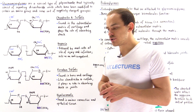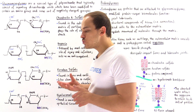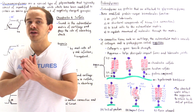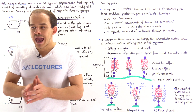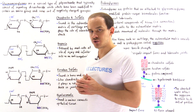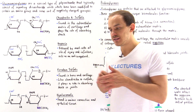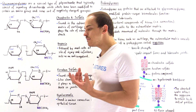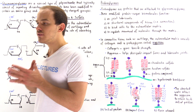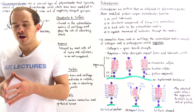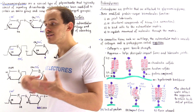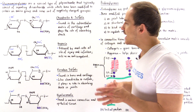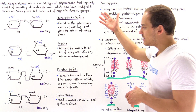Now, one of these sugars is an amino sugar, meaning it contains an amino group. And at least one of the sugars in the repeating disaccharide unit is modified with some type of negatively charged group — for instance, a sulfate group or a carboxylate group.